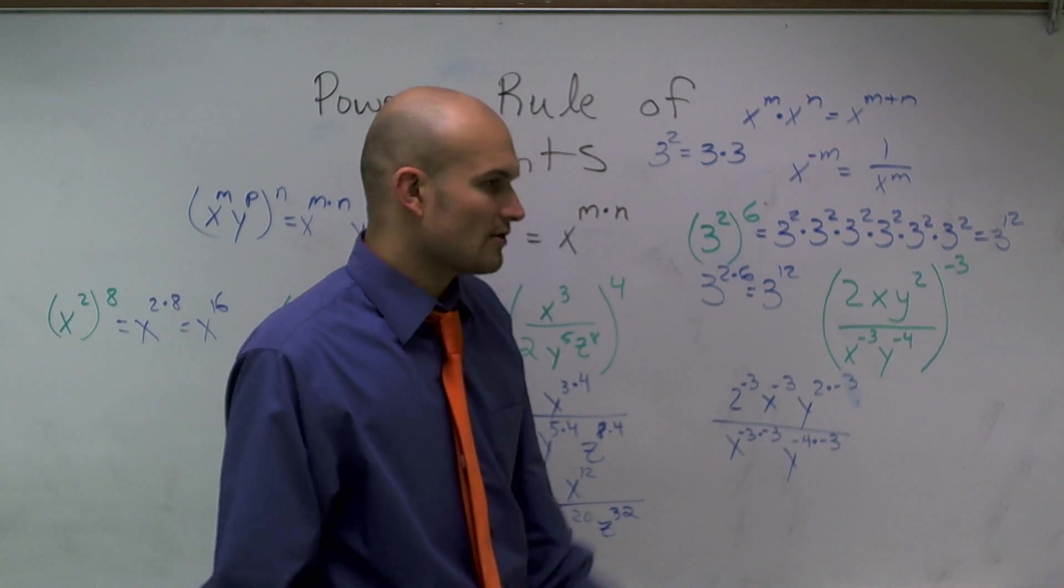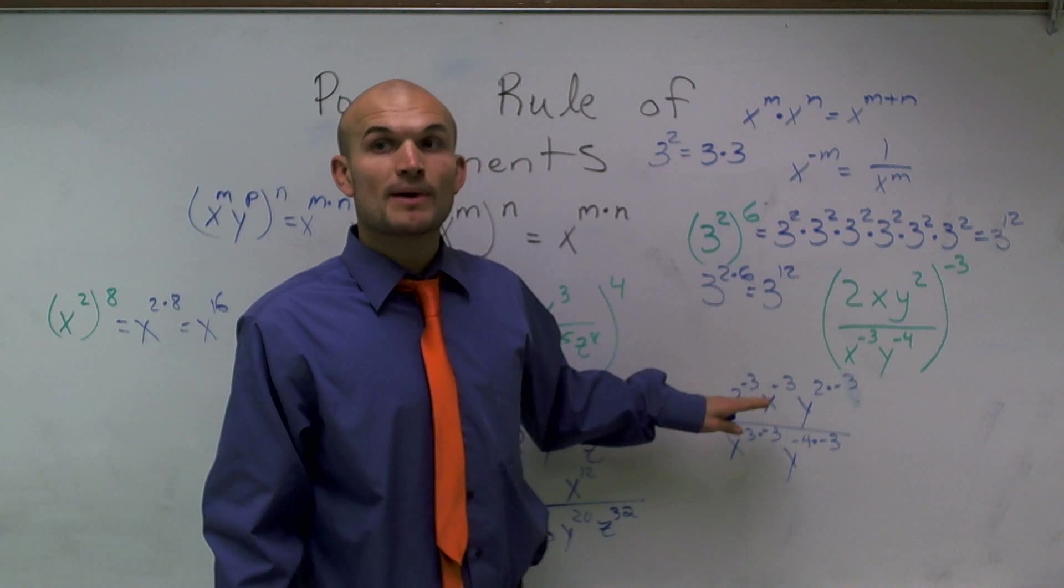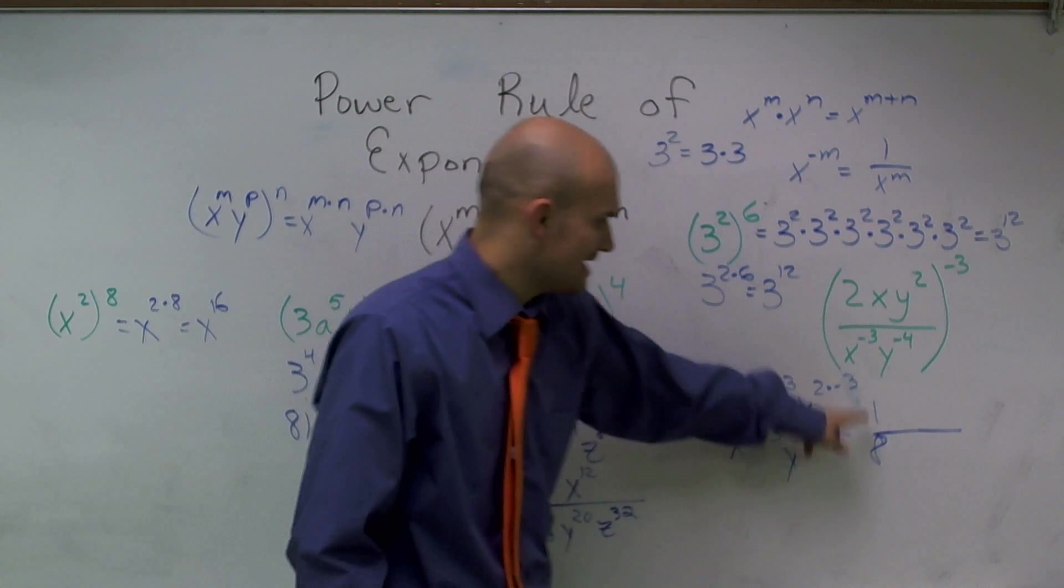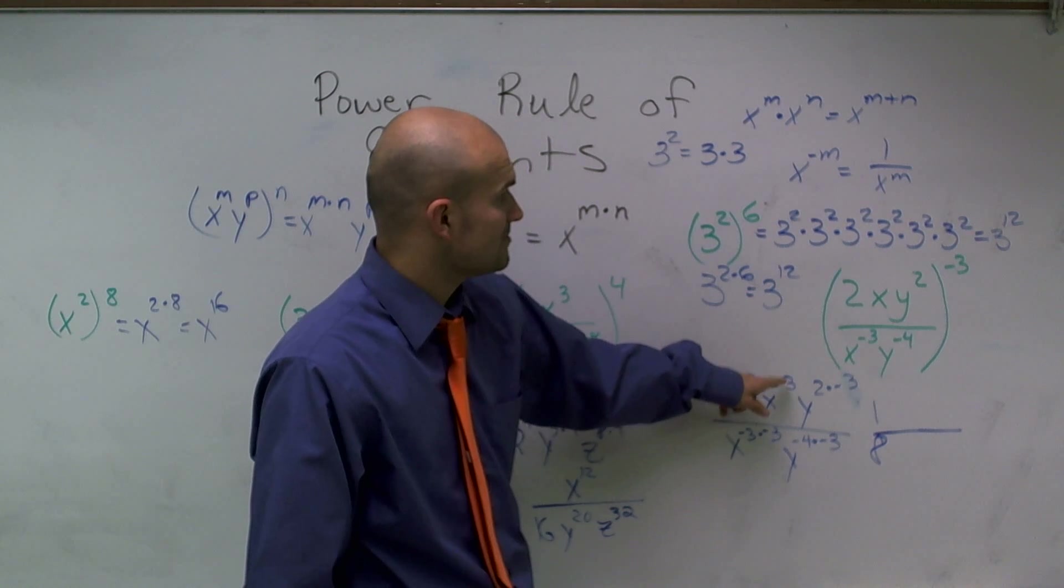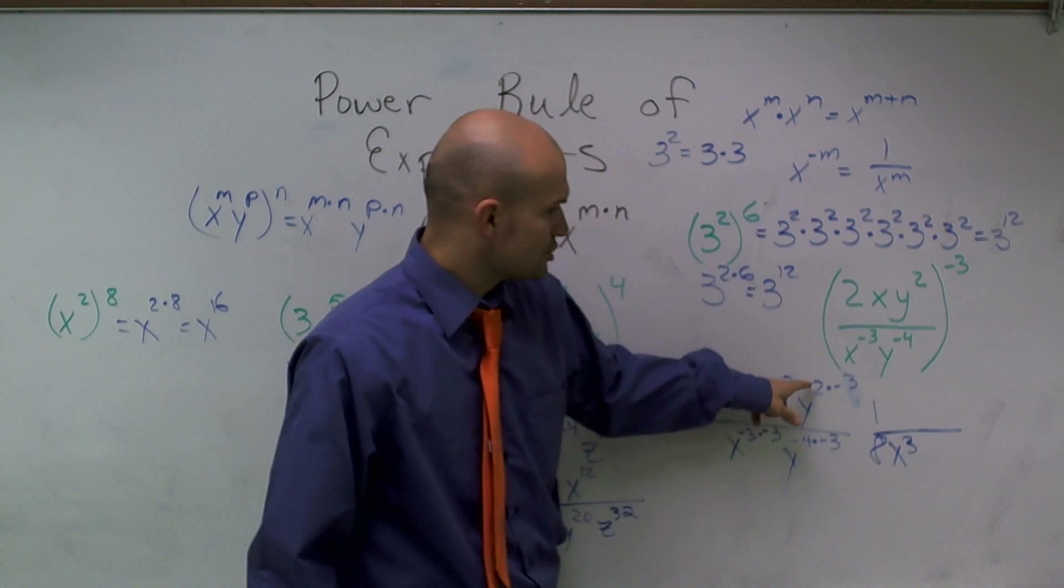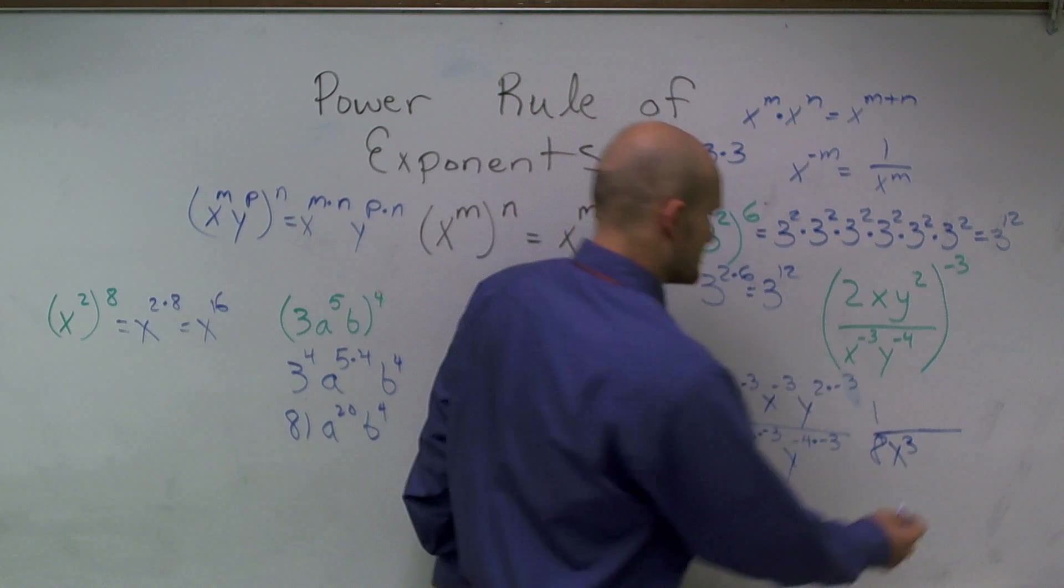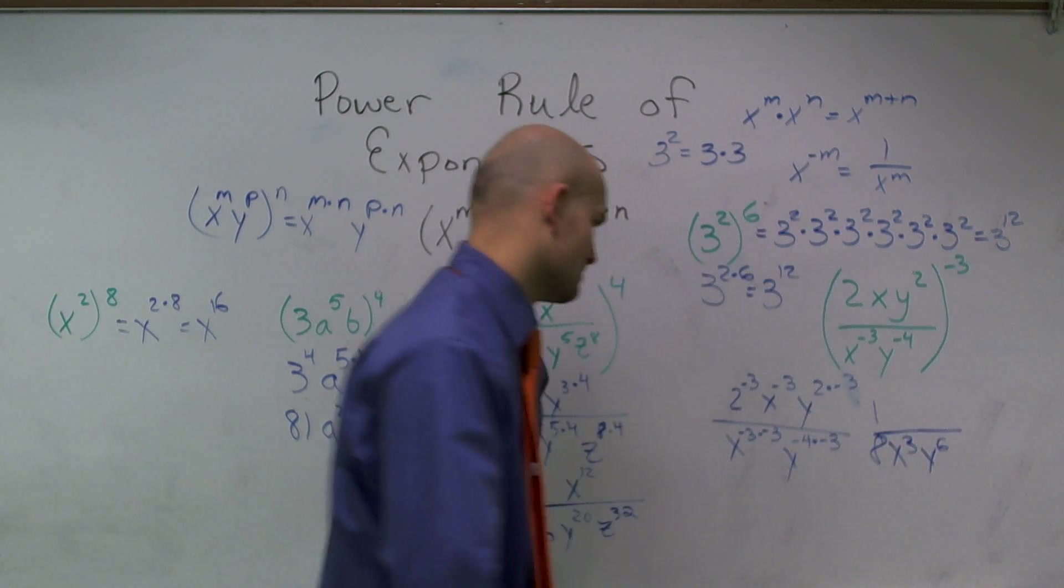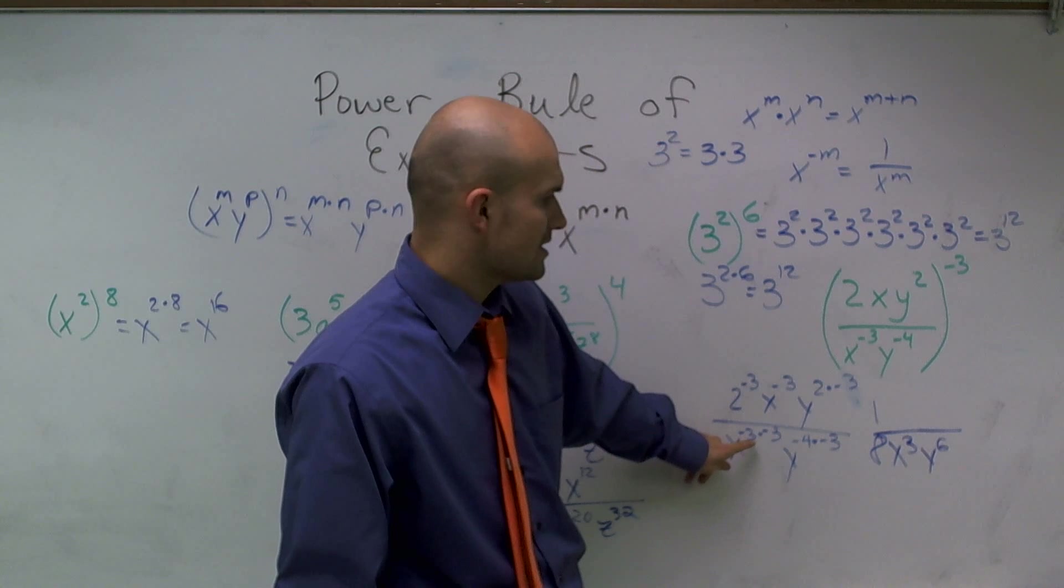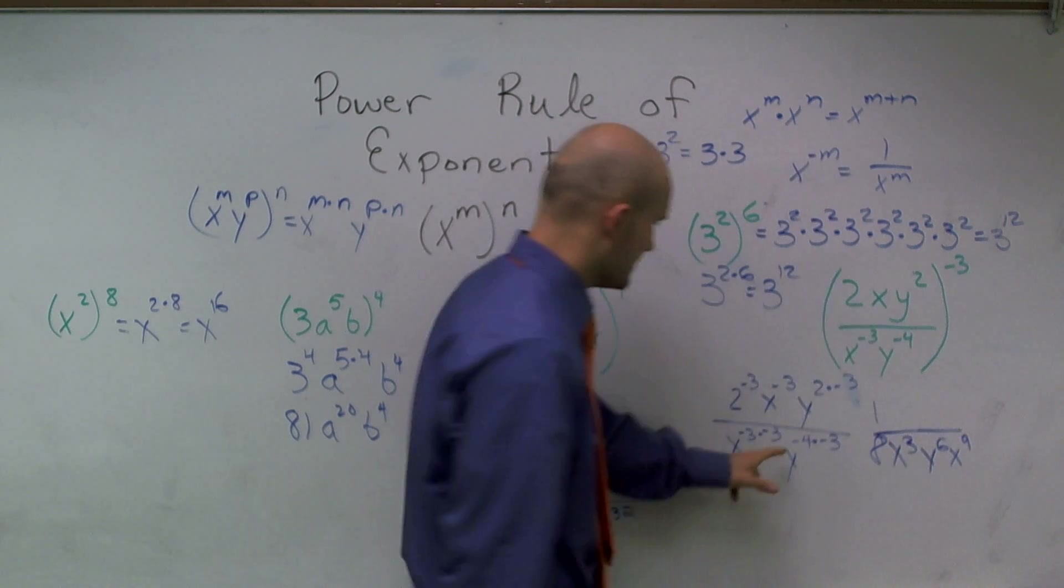So 2 to the negative 3rd power is going to be 1 over 2 to the 3rd power, so it should be 1/8. So now my 8 I know is going to be on the denominator. x to the negative 3rd power is going to be 1 over x cubed, so I'm going to write my x cubed on the bottom. y, 2 times negative 3 is negative 6, so therefore y to the negative 6th would be 1 over y to the 6th. And then on the bottom here, I'll have x to the negative 3 times negative 3, which will be to the positive 9. So therefore, that's going to stay on the bottom, x to the 9th. And then here, I'll have y to the 12th.